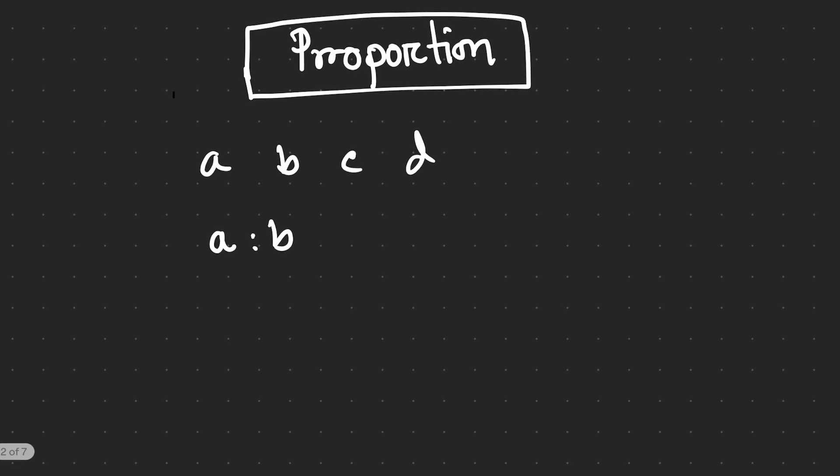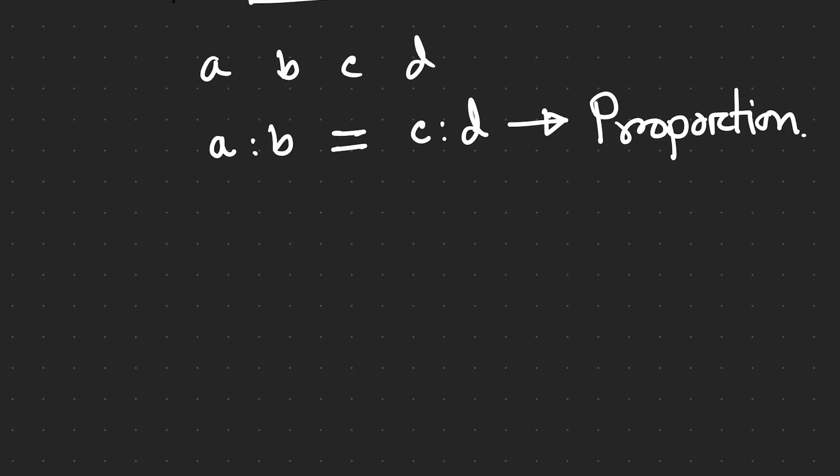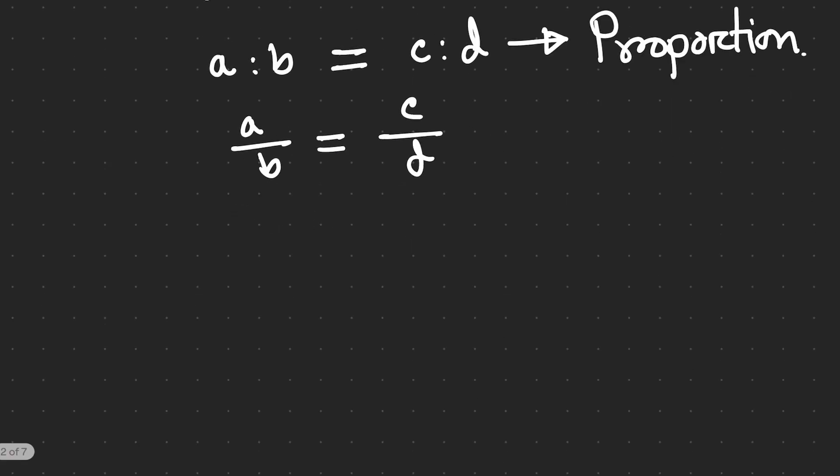So the ratio of a and b and the ratio of c and d are equal. In this situation, it is called proportion. This can be written this way as well: a divided by b equals c divided by d. 'Is to' means just a ratio between a and b, or if we divide a by b, it represents ratio.